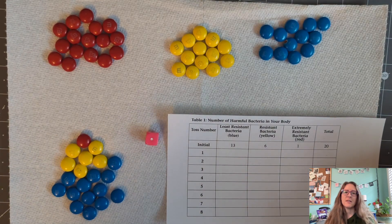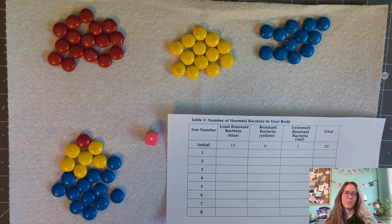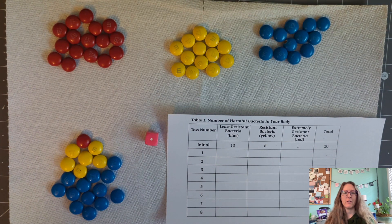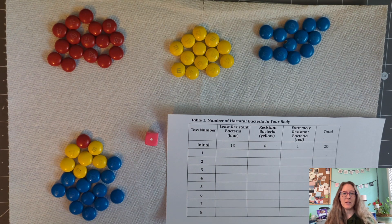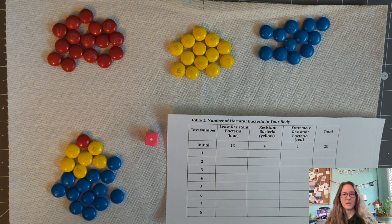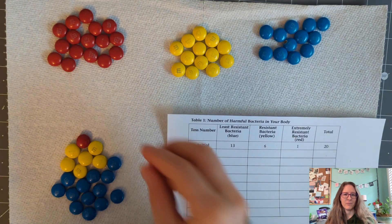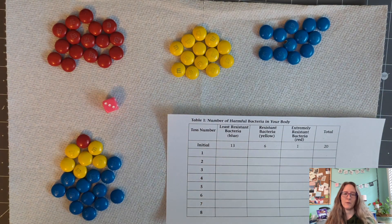The materials for this activity can be purchased, but all you really need is three different colors of tokens and some dice. You could use beans or M&Ms or even little pieces of paper that are different colors. Whatever you have on hand will work wonderfully.